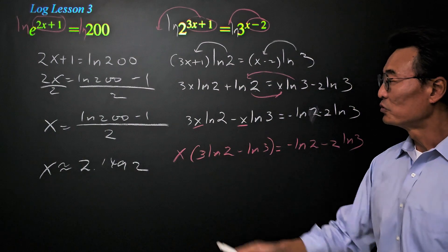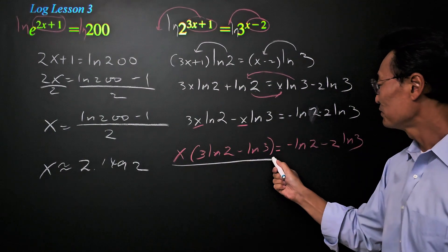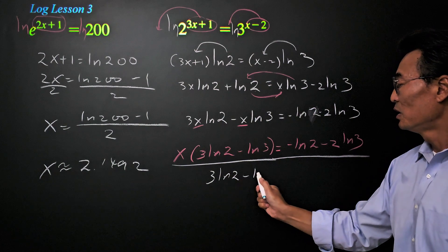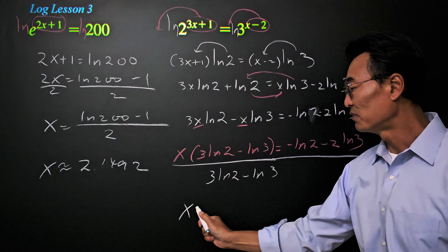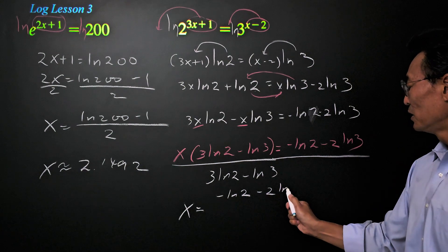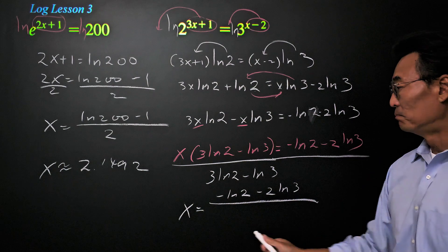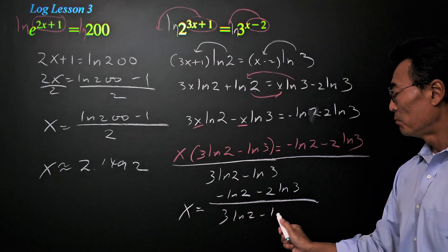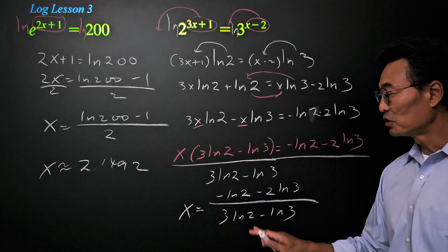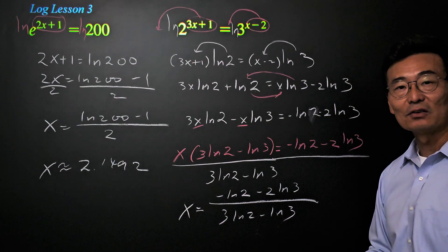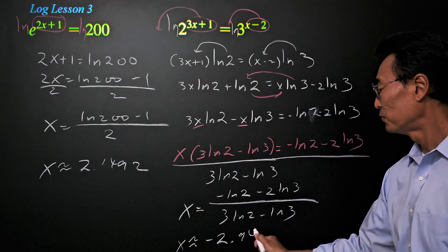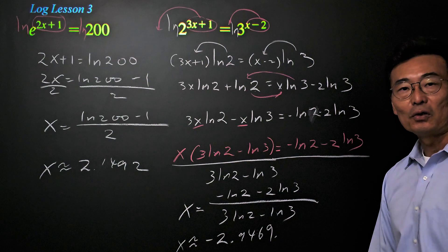Now we're able to factor the x out to the front, where we get x times 3 natural log of 2 minus natural log of 3 equals negative natural log of 2 minus 2 natural log of 3. Our final step is dividing both sides by 3 natural log of 2 minus natural log of 3, giving us our final answer: x equals negative natural log of 2 minus 2 natural log of 3, all over 3 natural log of 2 minus natural log of 3. If you want a decimal answer, plugging this into the calculator gives approximately negative 2.9469, rounded to four decimal places.